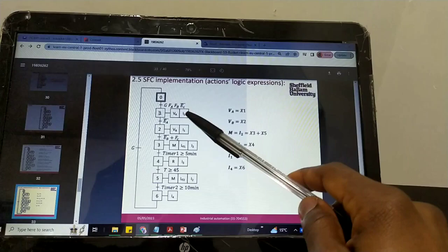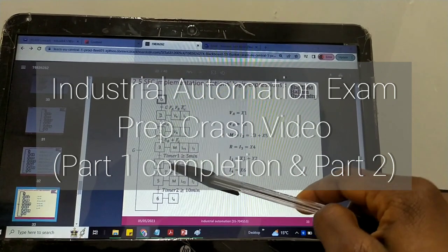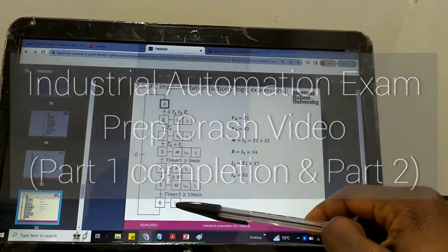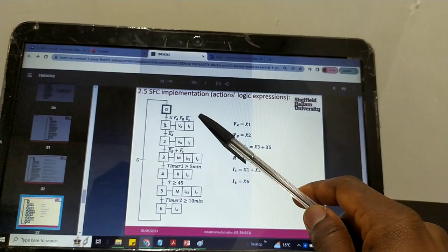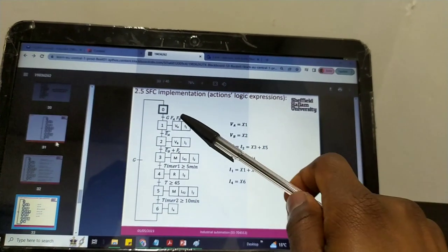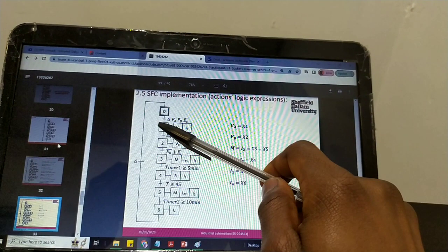There was something we didn't cover in part one which I think should be covered. I should quickly conclude how to write outputs. These are the outputs to the right. All you need to do to write for VA is check everywhere VA appears and write it in terms of the steps. We write outputs in terms of steps.